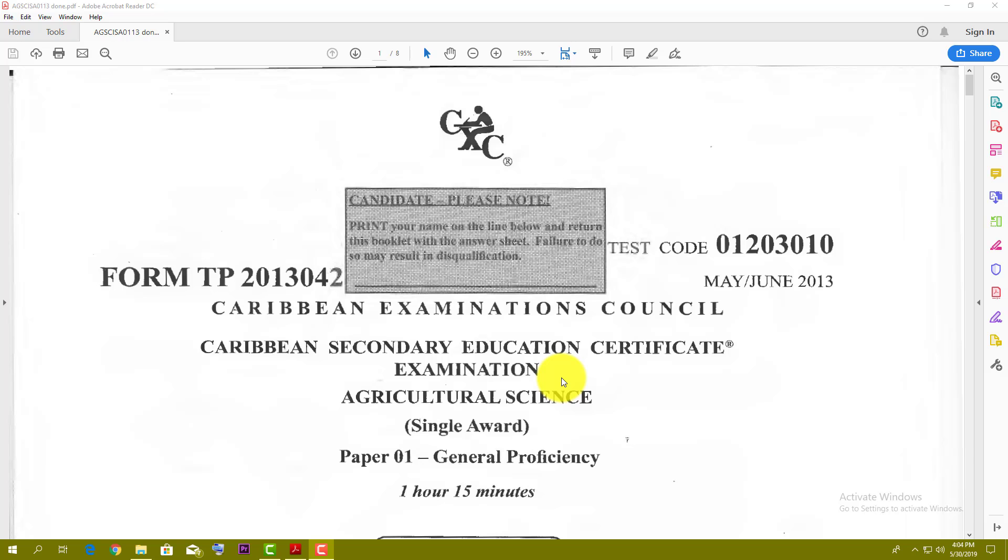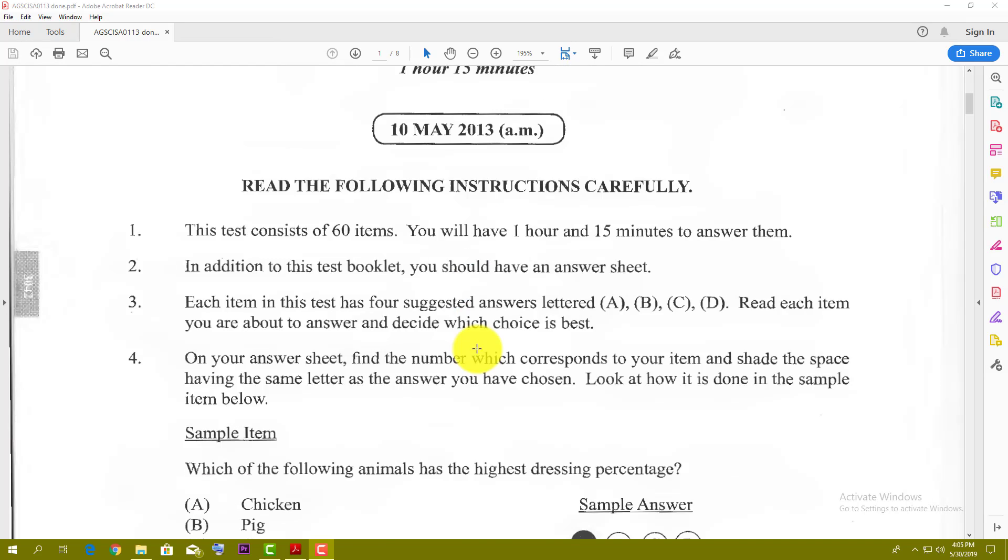Today we're doing something slightly different. We're looking at the May June 2013 agricultural science single award paper one, the multiple choice. In 2013 and 2014, there were some leaked paper ones from CXC. These are official leaked paper ones. They're not really readily available. I've selected them already, so I'll run through it and record it so you can see the choices I made, the best choices.